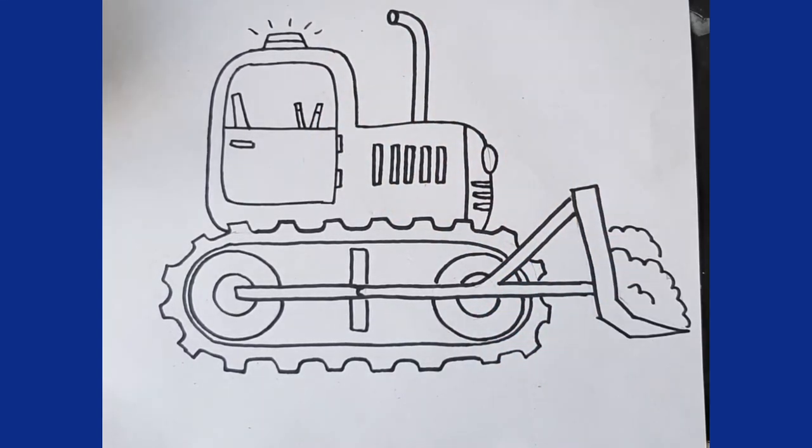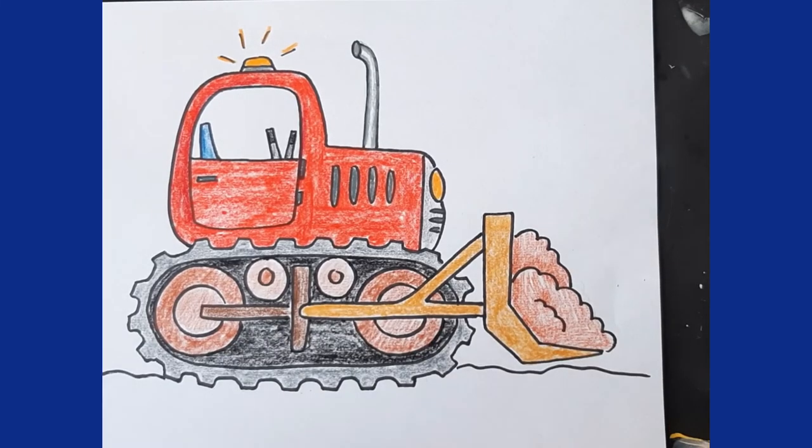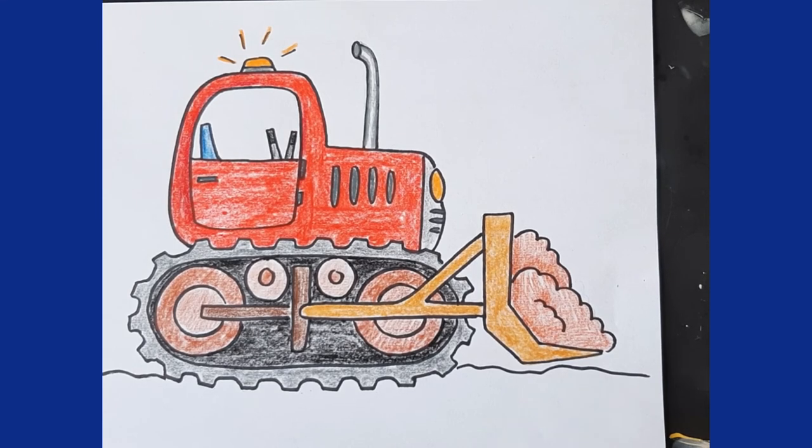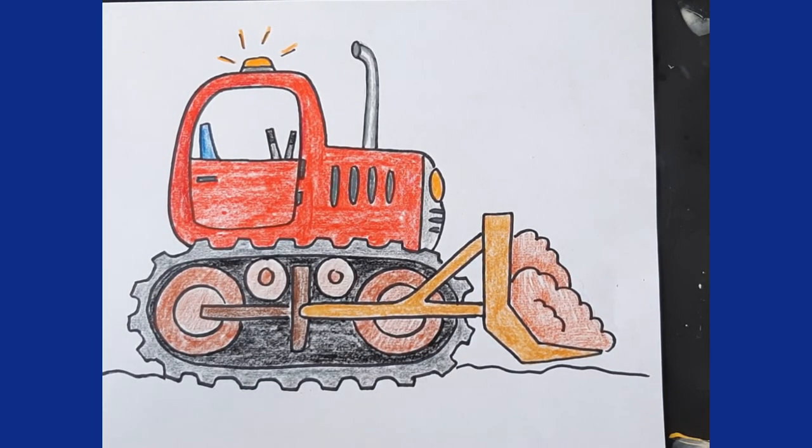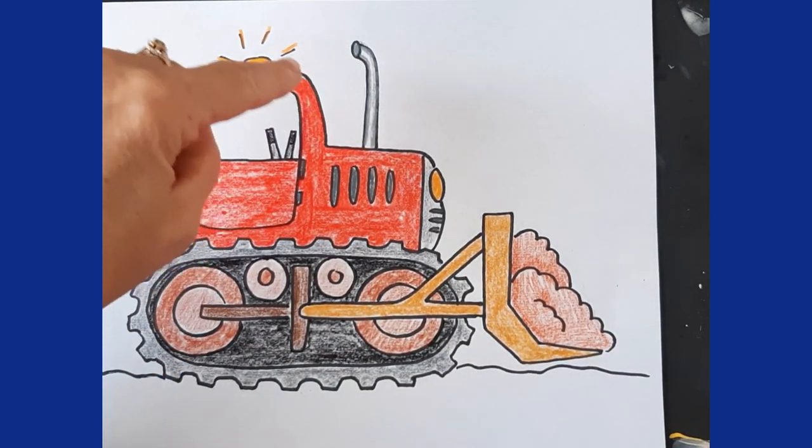Let's take a look at our colored one. So here's the colored one that I did. I decided to have a red bulldozer. I have my light shining. I did a little bit of that coloring dark to the edge to the inside.